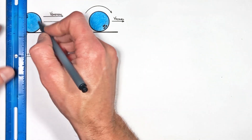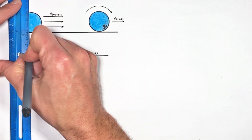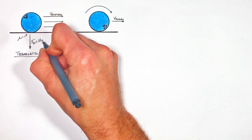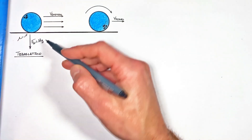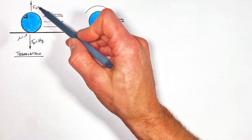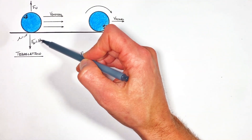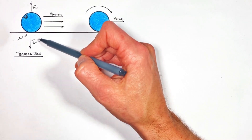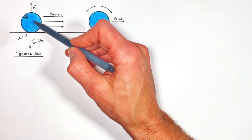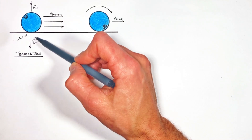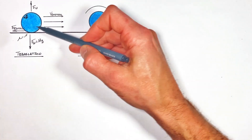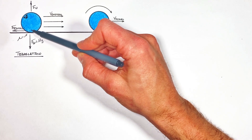The first force we need to worry about is gravity, which is equal to the mass times the acceleration due to gravity acting on the ball. Then there's the normal force holding the ball up. The normal force and gravity cancel out, but they're important because they lead us to the friction force acting between the ball and the lane — and that friction force is acting backwards on the ball.